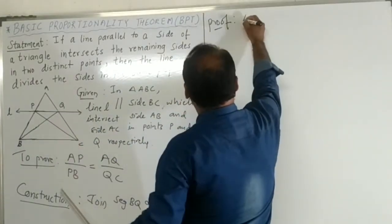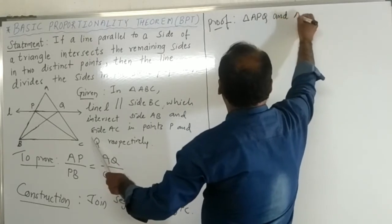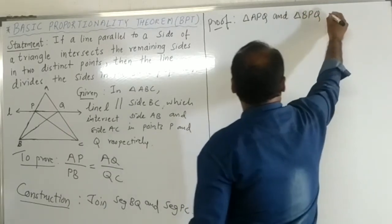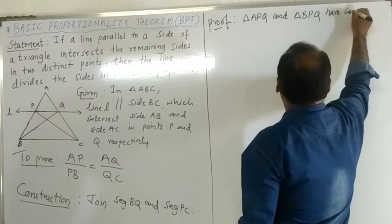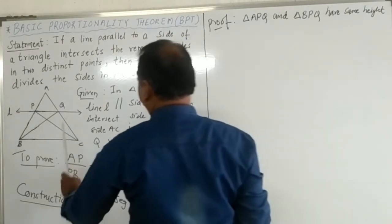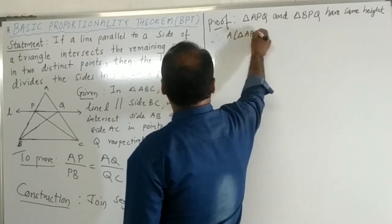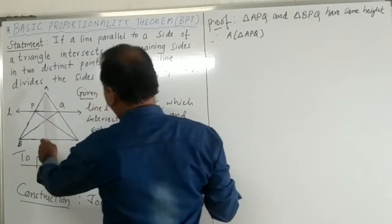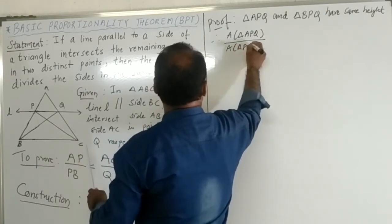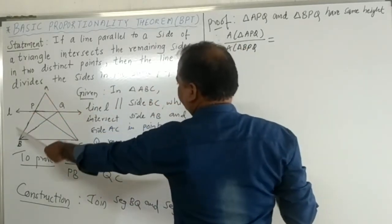Consider triangle APQ and triangle BPQ. These two triangles have the same height. Since the area of two triangles is proportional to their corresponding bases when the height is equal, the area of triangle APQ upon the area of triangle BPQ is equal to AP upon PB. This is statement number one.